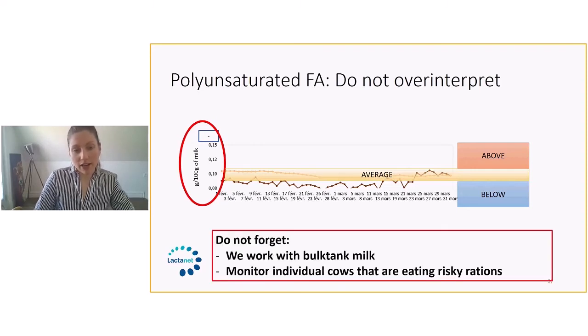Remember that we are working with bulk tank milk. We are not looking at individual cow data. If you come to an understanding that there might not be rumen acidosis in the whole herd, remember that some cows might be at risk if they are eating risky rations where there can be a lot of sorting, large volumes of top dress that are given to really high producing cows. It's not because we make hypothesis at the bulk tank level that there are no cows at risk in that barn. It's just something to keep in mind when you're looking at polyunsaturated fatty acid.